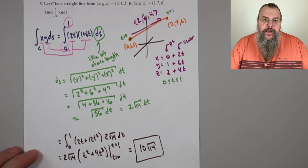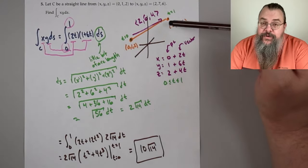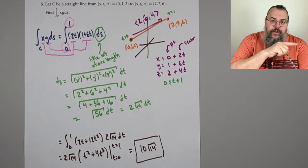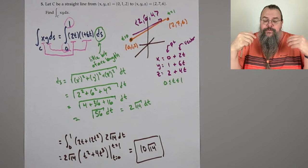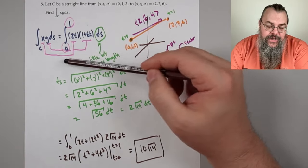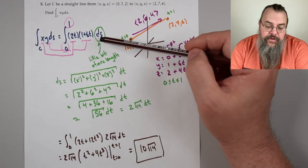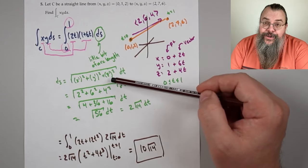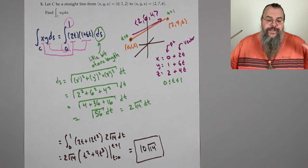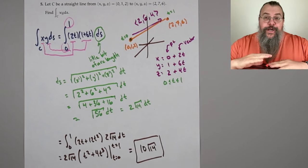The key idea: rewrite everything in terms of a parameterization t. Turn your function in terms of t using the parameterization. Remember ds stands for arc length — we know how to do that. Get your bounds, put it all together, and work it out.